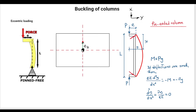To get to that explanation, we're going to take a column and assume that the force is applied at a certain distance e from the center of the column. Let's assume it's a very slender column. When I apply the force, I expect the column to deform in a certain way. As in the case of the Euler formula, we start by studying this to get to the conclusion on how to introduce this effect into our column formulation.